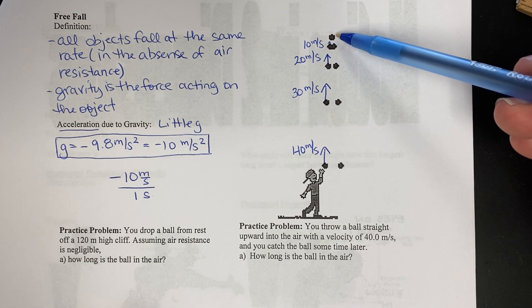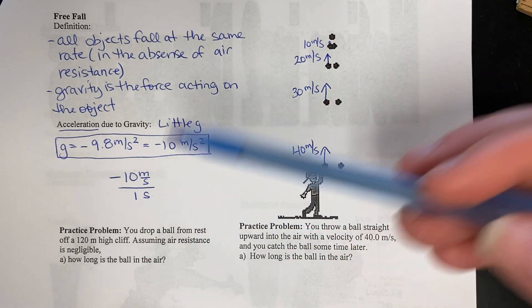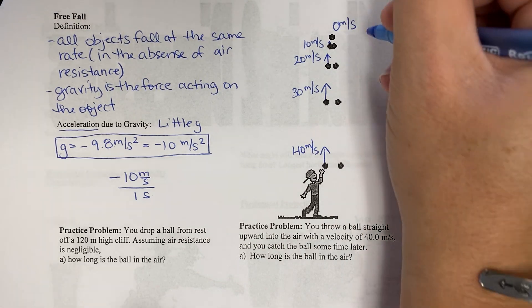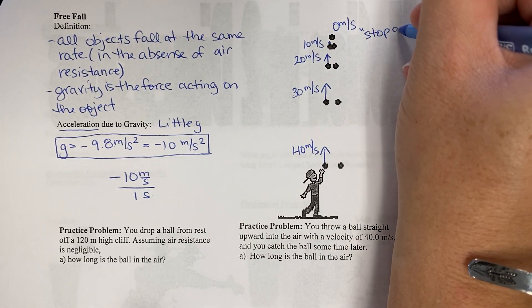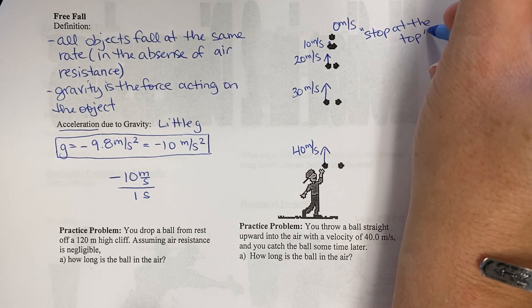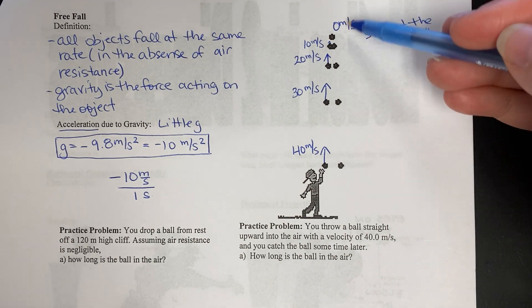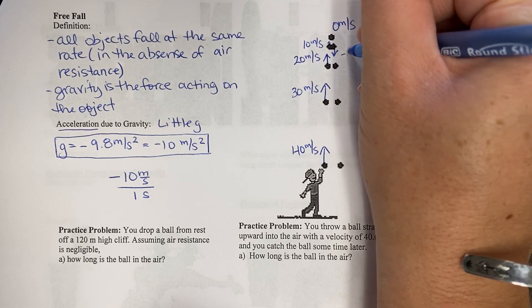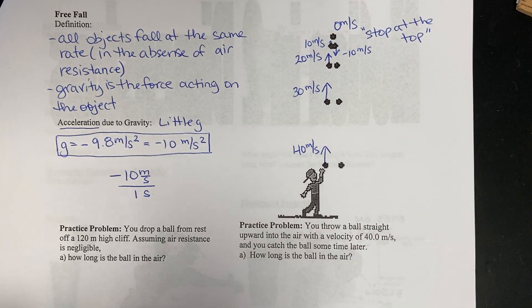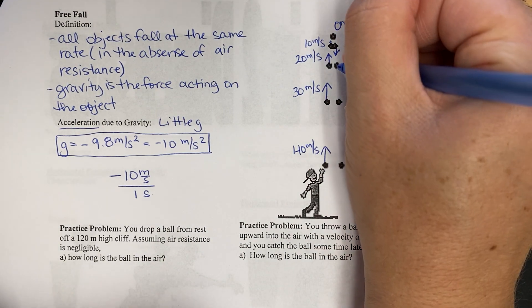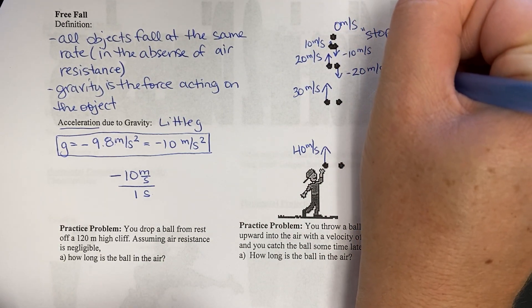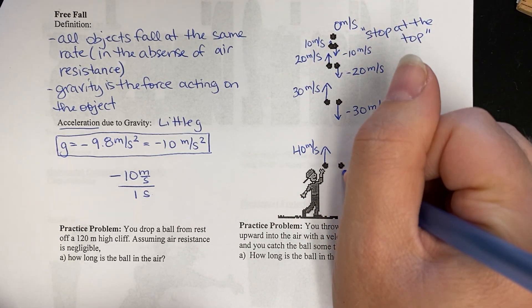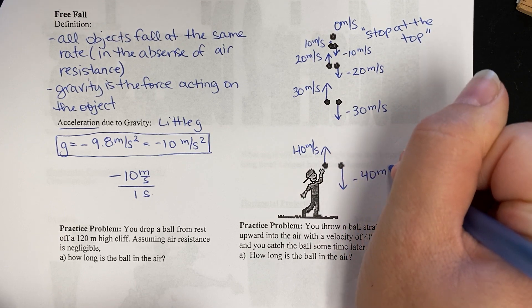Okay, now what happens here? What's the velocity here? Well, if we lose 10 meters per second every one second, the speed is zero. So we are momentarily going to stop at the top. Okay, now what happens one second after that? Well, zero minus 10 would give us negative 10 meters per second. And if we lost another 10, we would get negative 20 meters per second. Negative 30 meters per second. Negative 40 meters per second.